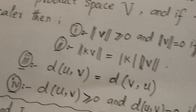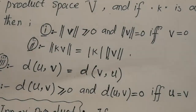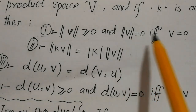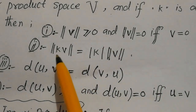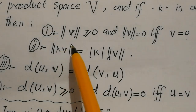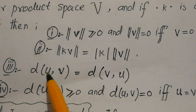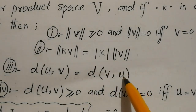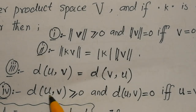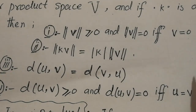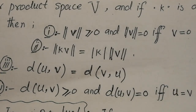A few properties we discussed previously: the norm is always non-negative, and if it is zero then the vector itself must be zero. If we multiply a scalar k with a vector then take its norm, that equals |k| times the norm of v. The distance between u and v equals the distance between v and u, and is always non-negative — equal to zero only if u and v are the same vector.